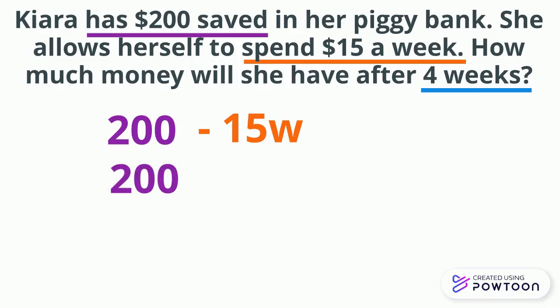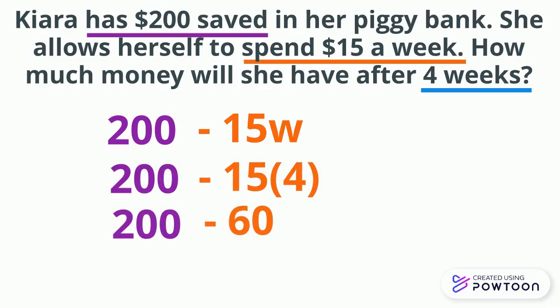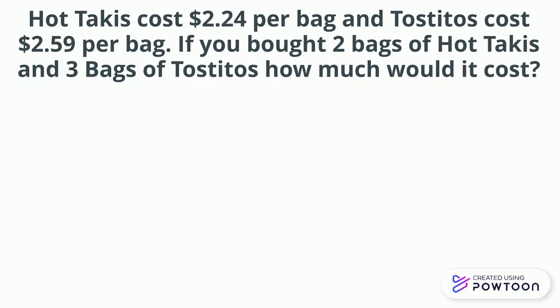To find how much money she'll have after four weeks, we substitute 4 for the variable W. We get 200 minus 15 times 4, which gives us 200 minus 60, and that equals $140. So she'll have $140 after four weeks.